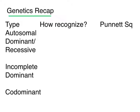So we're going to call this genetics recap, and what we're looking at is the type of inheritance we've learned about, how you recognize it, and what does the Punnett Square look like. You should have a chart of these. This is the first three lines from your chart — there are three more lines on the next slide — and then I want to talk to you about polygenic traits.